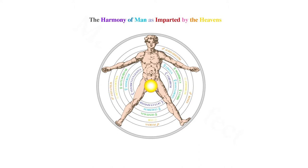Jupiter influences the pulmonis, or lungs, the costae, or ribs, the pulsus, or pulse, semen, and the hepar, or liver.